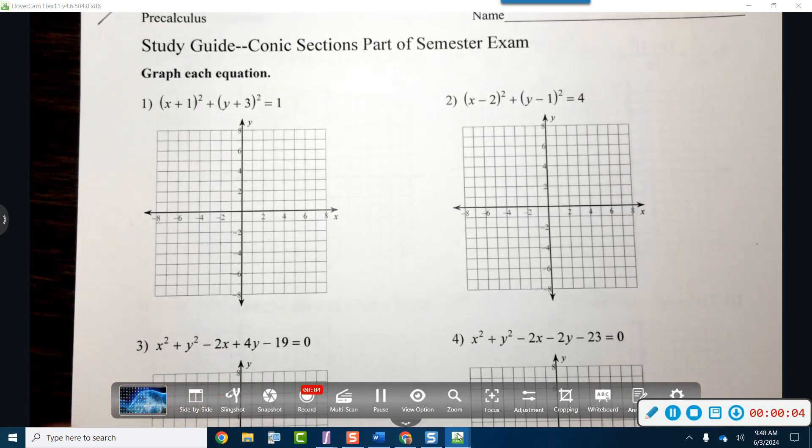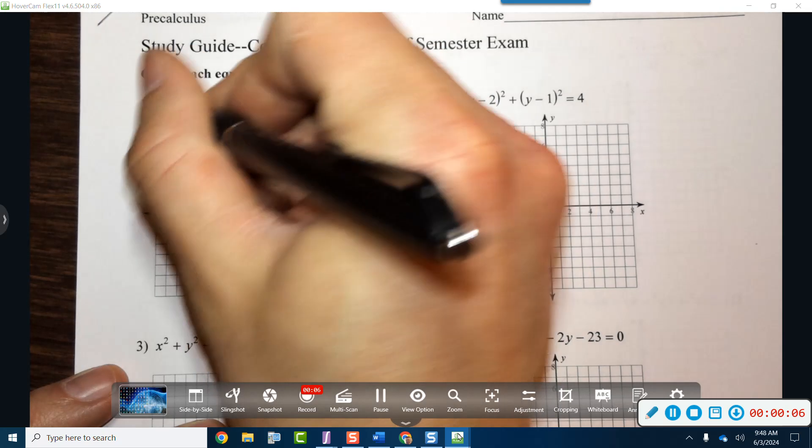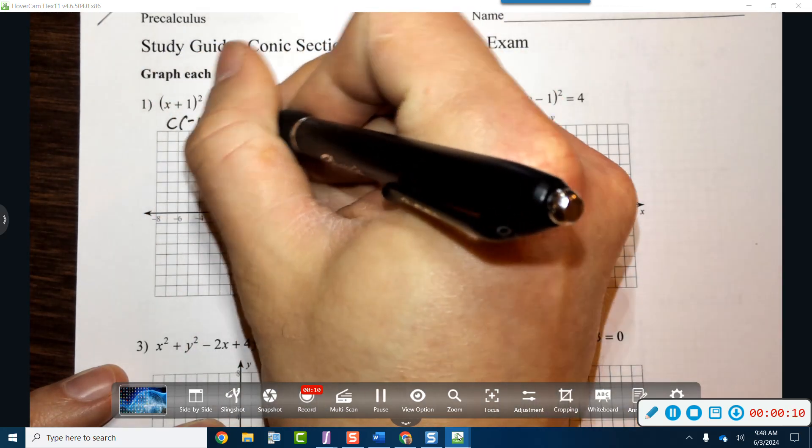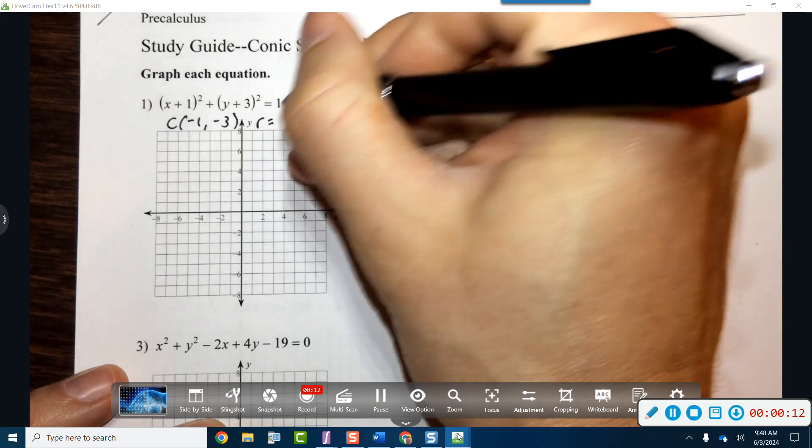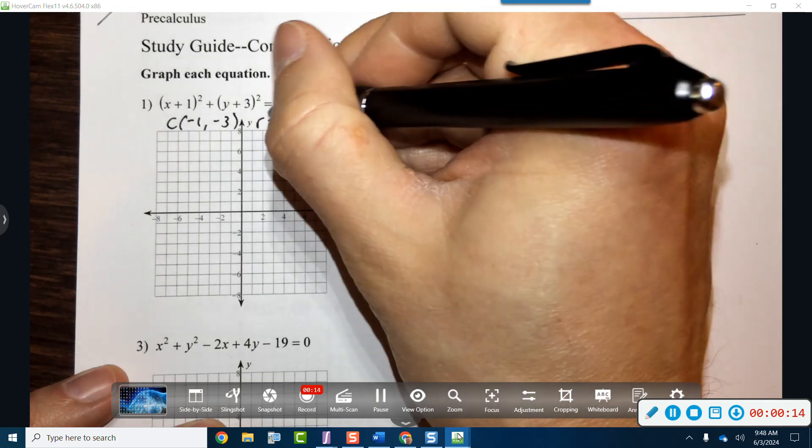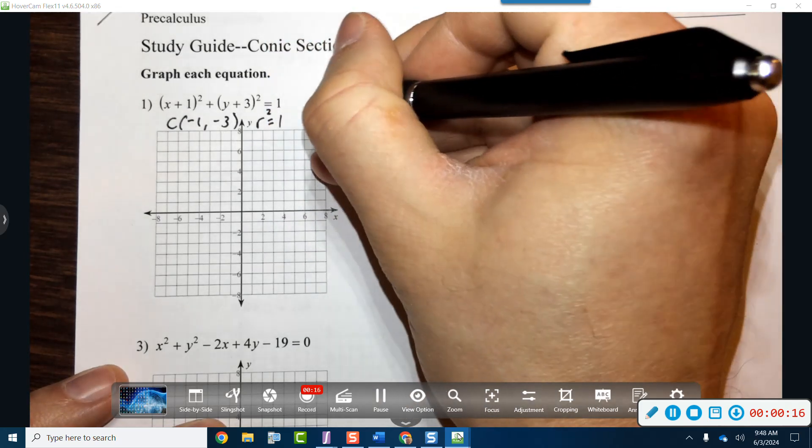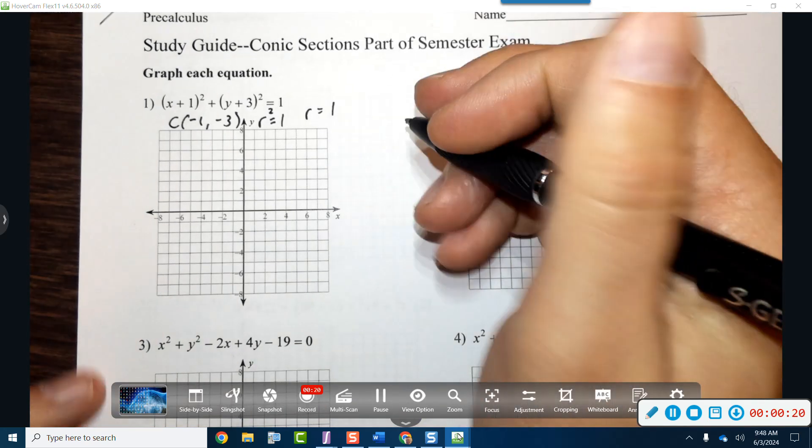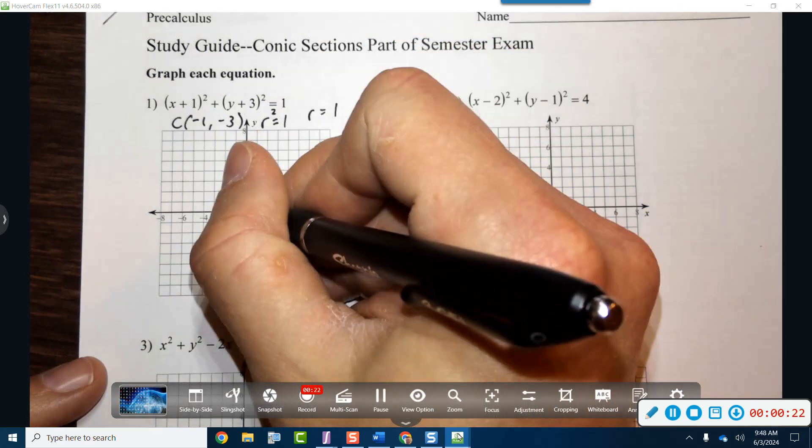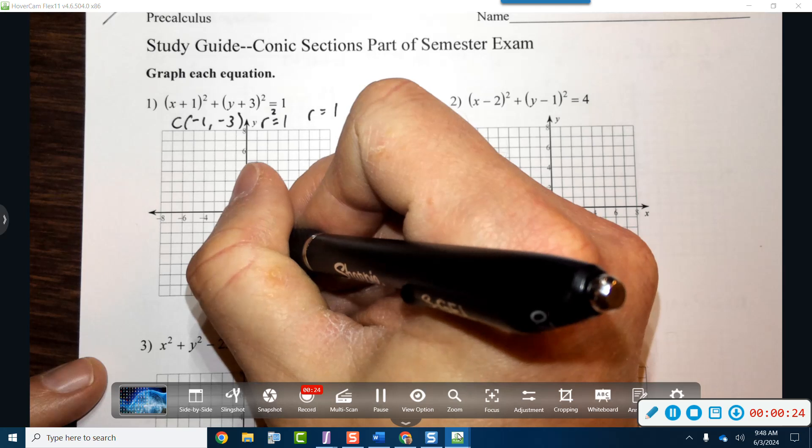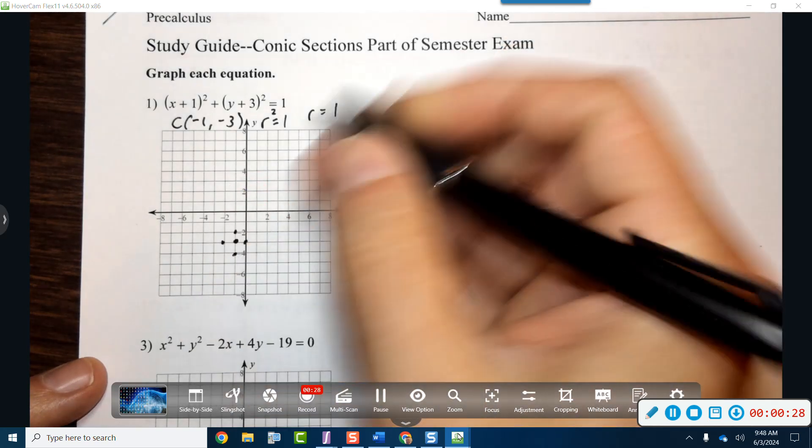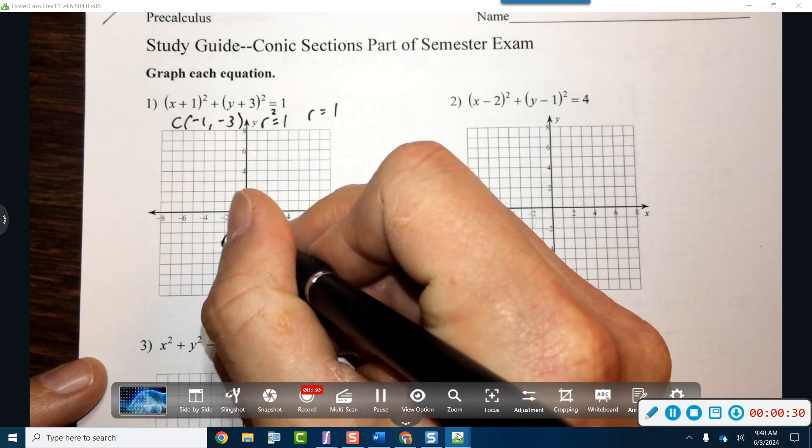Graphing circles looks like we have a center of negative 1, negative 3 and we have a radius of r squared would be 1, so therefore r is 1. Just take the square root of whatever value that is. So we are at negative 1, negative 3 and we have a radius of 1, so there we go, that's that guy.